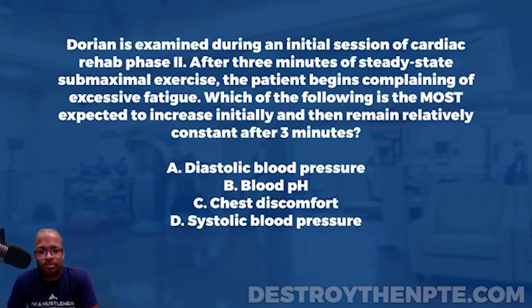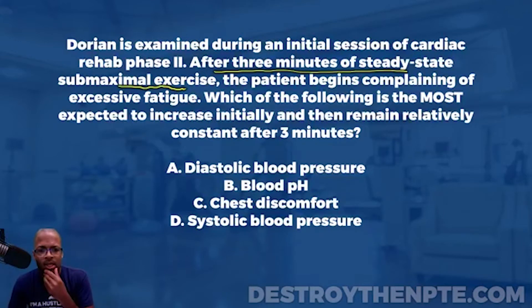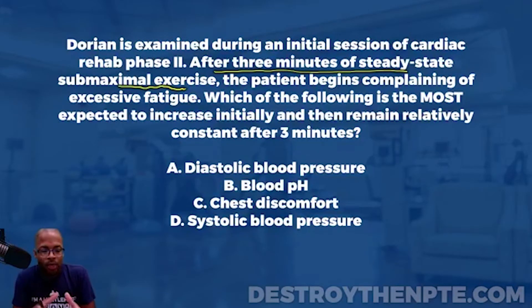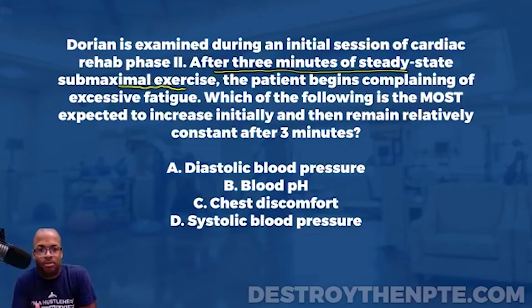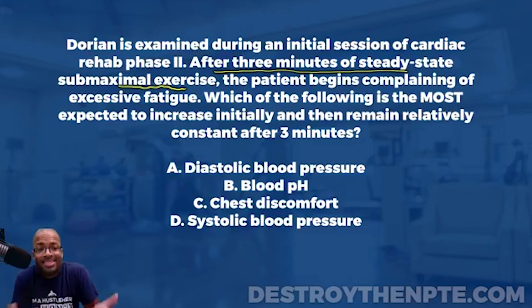After three minutes of steady state submaximal exercise — let's slow down here. What is steady state submaximal exercise? Keeping it straightforward: steady state is when the energy required by the muscles equals the amount of oxygen being delivered to those muscles. The muscles need oxygen to create ATP to do their job. So steady state submax exercise is when energy required by the muscles equals how much oxygen is actually being delivered.